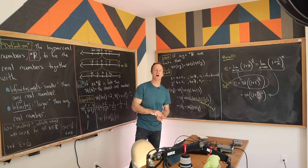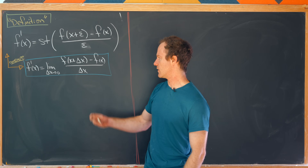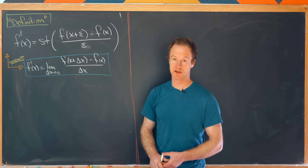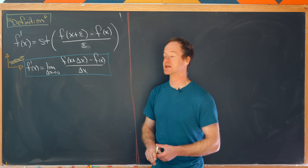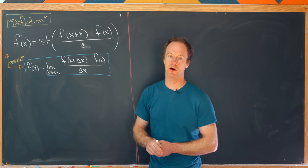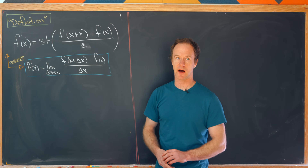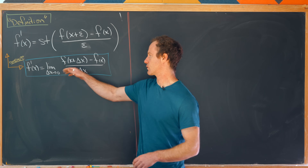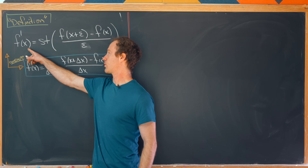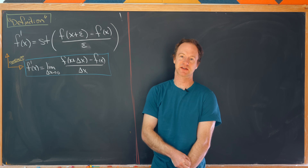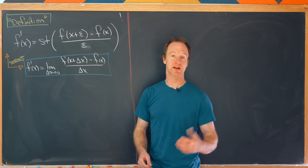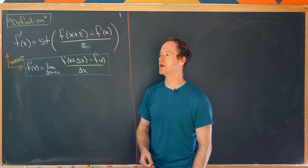Let's define the derivative. The limit definition of the derivative is f prime of x equals the limit as delta x goes to 0 of (f(x + delta x) minus f(x)) over delta x. Instead of taking a limit as something goes to 0, we replace delta x with the infinitesimal epsilon and replace the limit with the standard part. So f prime of x equals the standard part of (f(x + epsilon) minus f(x)) over epsilon — any infinitesimal will work here.